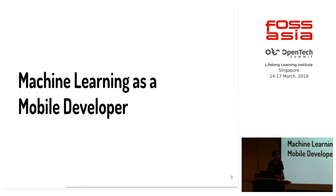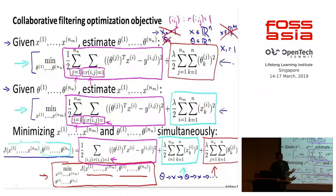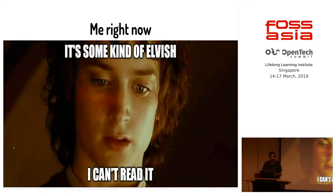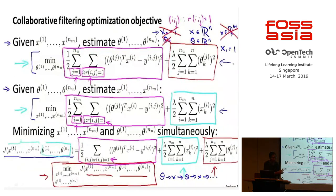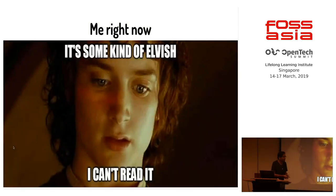So machine learning as a mobile developer — you can replace this as a web developer or as a non-ML developer. This is what you see if you go on an online course by Andrew Ng. This is an actual snapshot from one of the deep learning initiatives, the course that Andrew Ng recently launched. I tried doing that course and I stopped at this slide. It's some sort of elvish. I used to learn these things back in high school and college, but as you start working as a software developer, you don't really encounter these things. Summation, integration, theta, alpha, beta, gamma — we don't really use them in our daily lives.